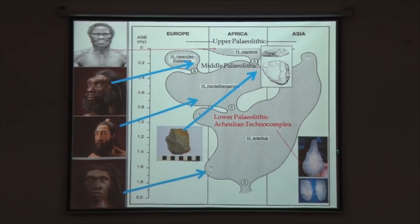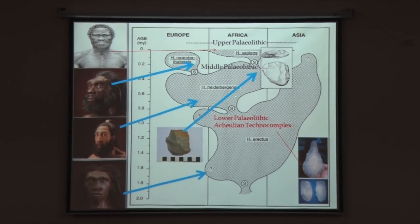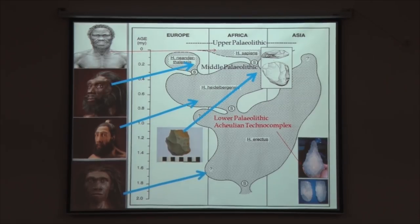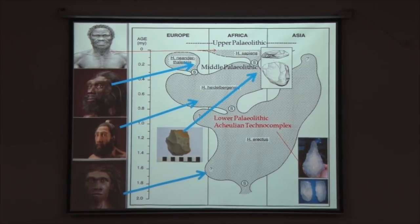Homo erectus is credited with the invention of Lower Paleolithic Acheulean technology. We have two distinctive types of stone tools diagnostic of this technocomplex: the hand axe and the cleaver. Homo erectus gradually gave rise to Homo heidelbergensis. Both Homo erectus and Homo heidelbergensis are found outside of Africa. Out of Africa 1 is largely associated with Homo erectus, while Out of Africa 2 refers to the expansion of modern humans, or Homo sapiens, out of Africa.